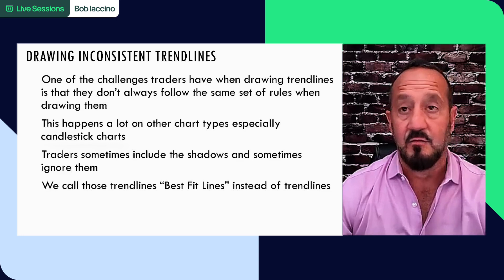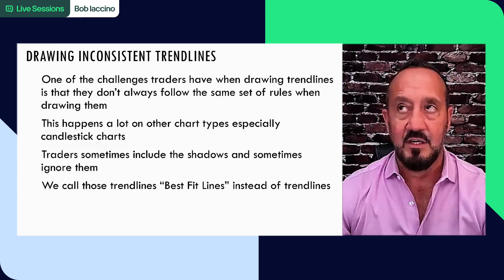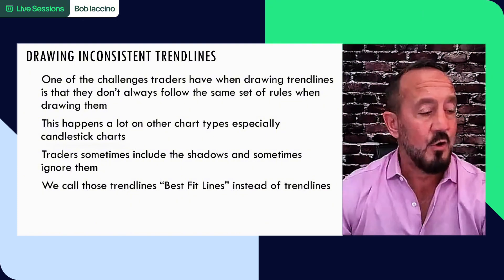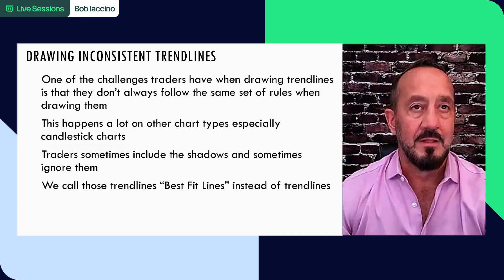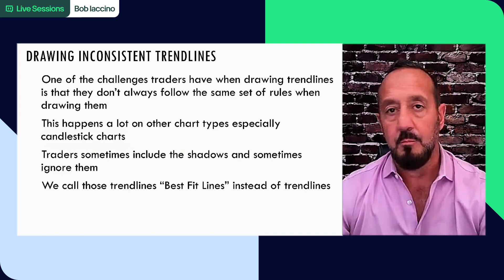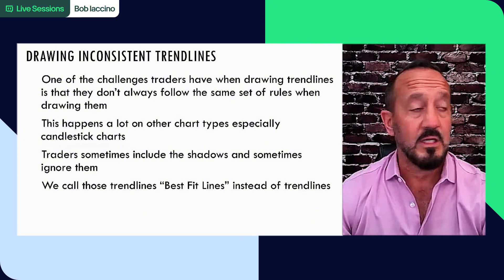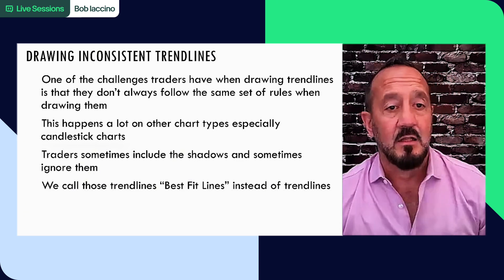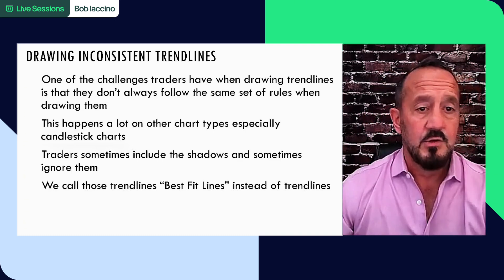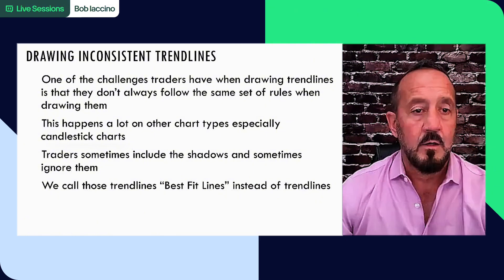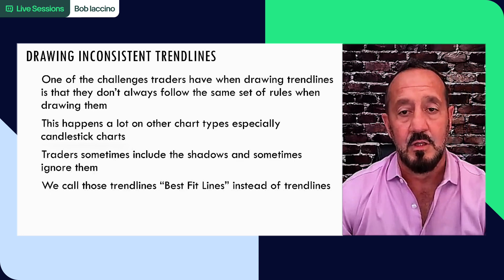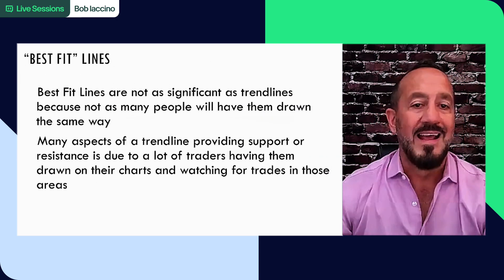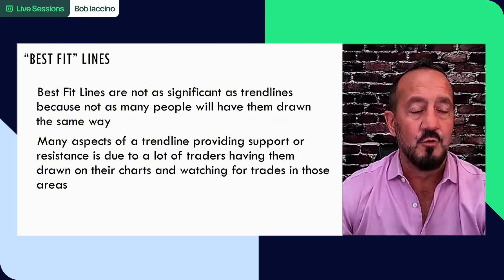Drawing inconsistent trend lines is one of the challenges traders have when drawing trend lines - they don't always follow the same set of rules when drawing them. We sent a chart out to a bunch of traders with no trend lines drawn on it and asked them all to draw the trend lines they saw. When they sent it back, we had what basically looks like a Jackson Pollock painting - lines everywhere, because traders don't always follow the same set of rules. This happens especially on candlestick charts. Traders sometimes include the shadows or the wicks, they sometimes ignore them.